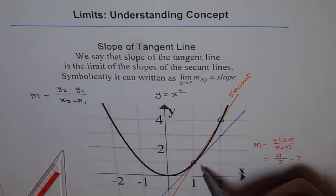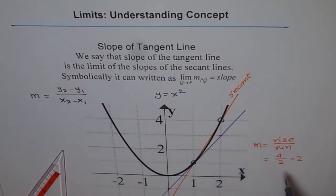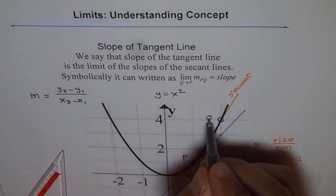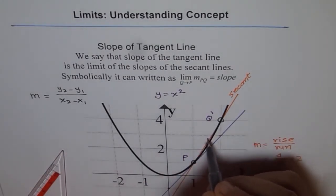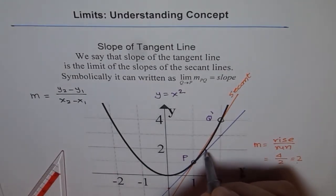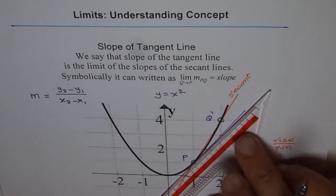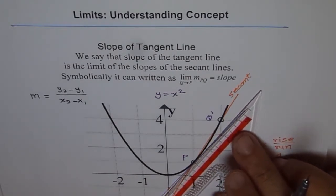The slope of this secant: rise is 1, 2, 3 and run is 1, giving a slope of 3. Of course that is far away from 2. Now, we want the slope of the tangent line at x equals 1 — call this point P, and the other point Q. What we can do is bring Q closer to P. So if we bring Q closer, then even closer, what happens to the slope of the secant?